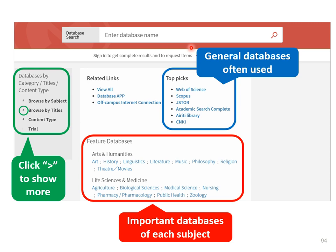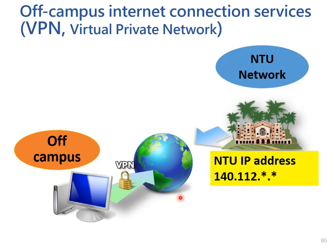It seems like too many to browse, right? Don't worry. Let me introduce widely used databases for you. In general topics, there are often-used databases such as Web of Science, ProQuest, JSTOR, Academic Search Complete, and so on. And in featured databases, there are important databases for each subject.